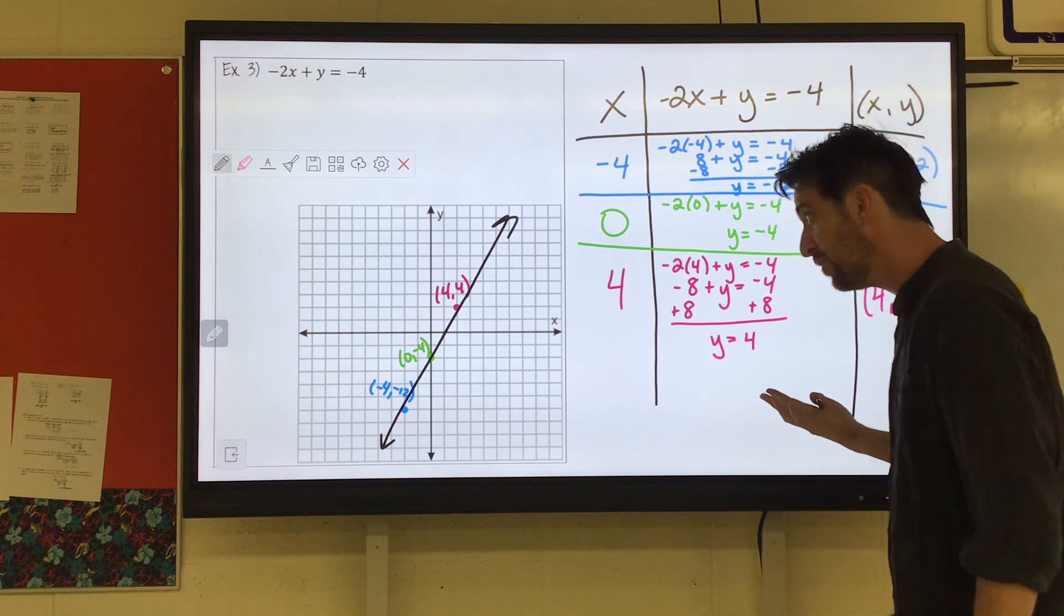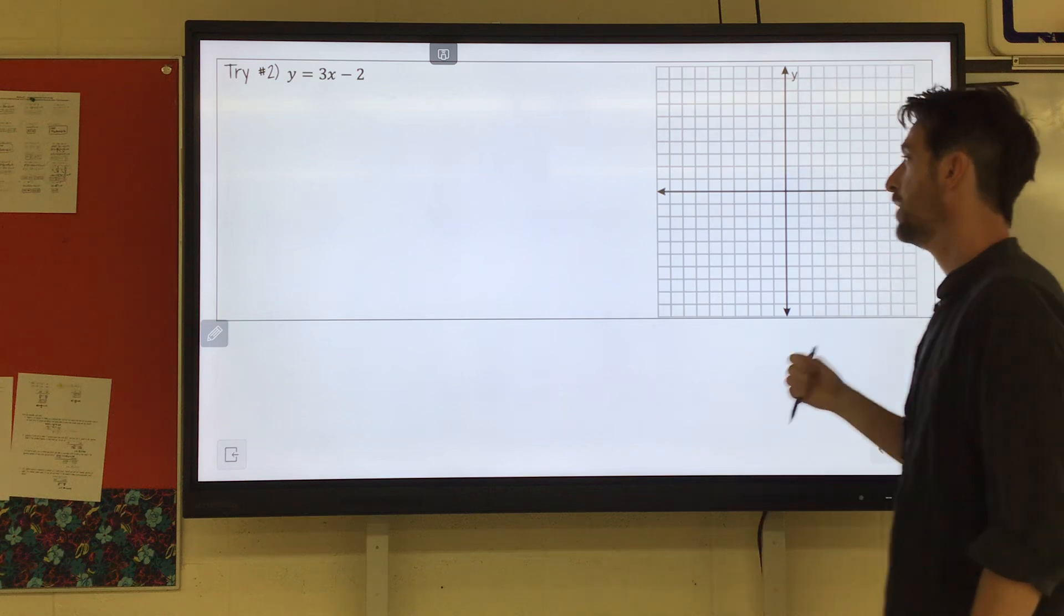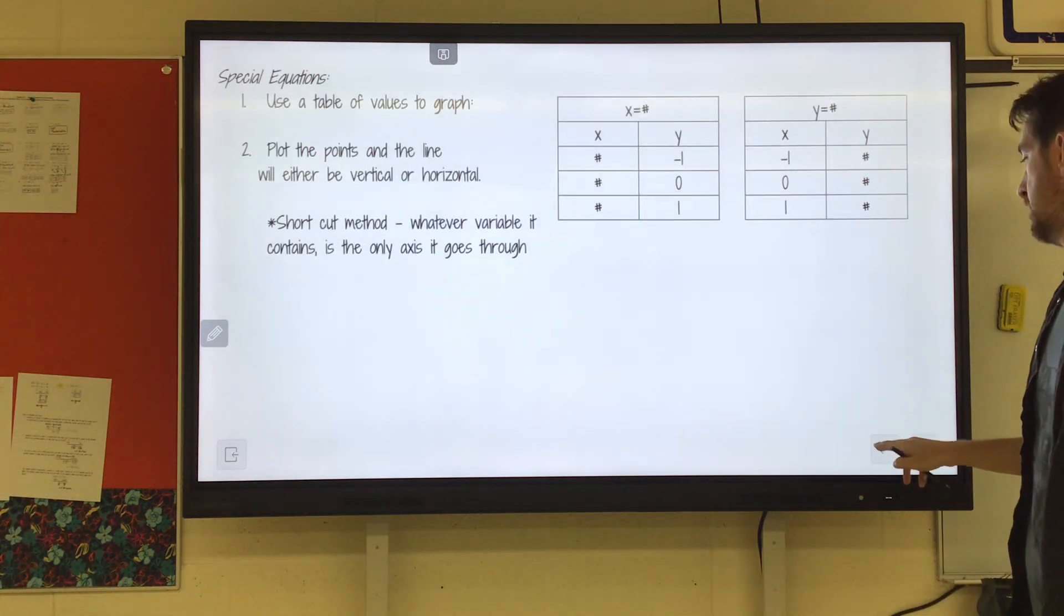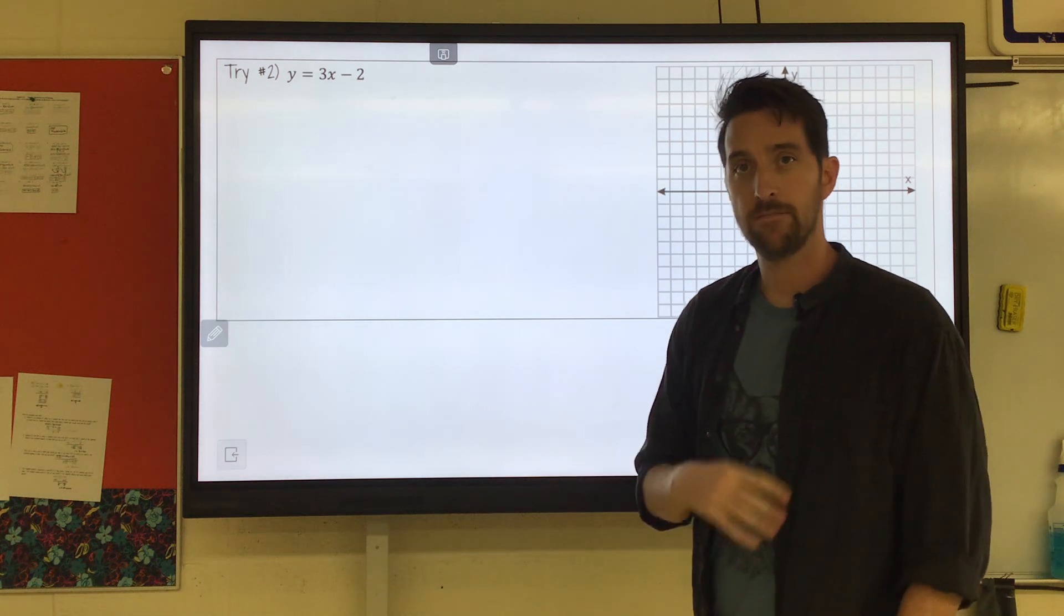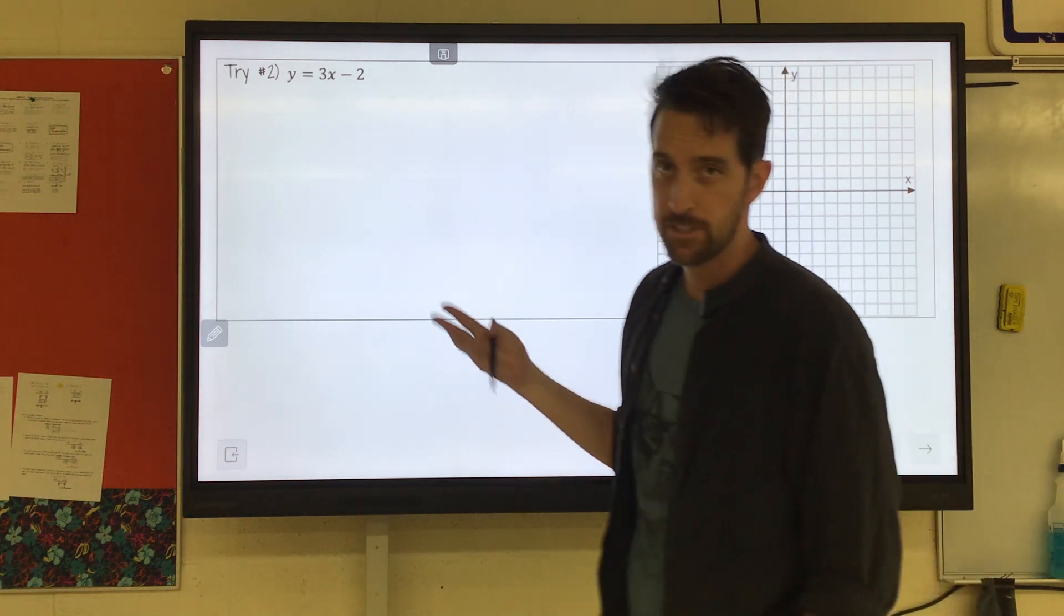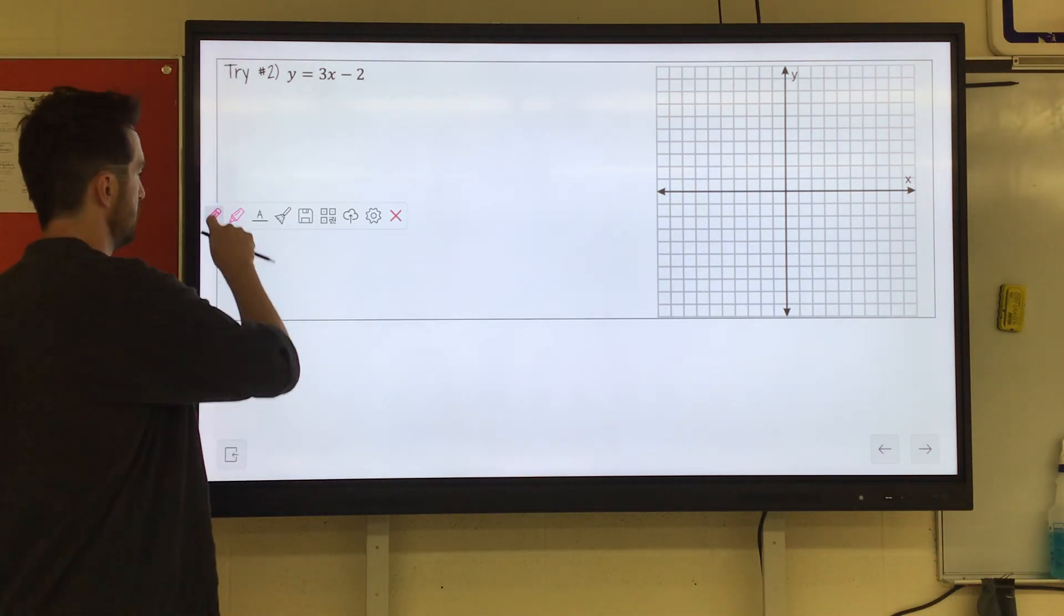I believe, if I remember correctly, oh yeah, you got one to try. So go ahead, pick some numbers for x, try it out, pause it, check back in, see if your line looks the same. Now you might choose different numbers than me, but our graphs should still look the same.